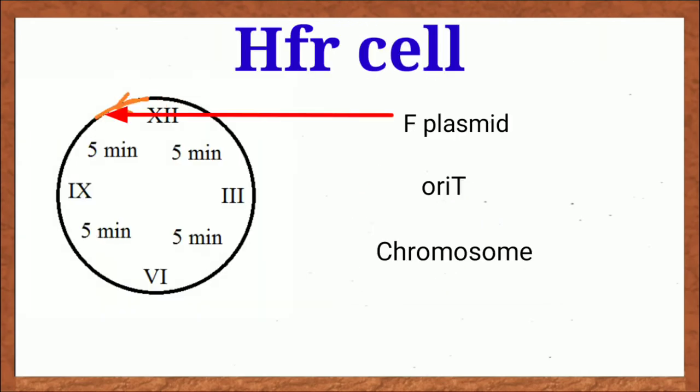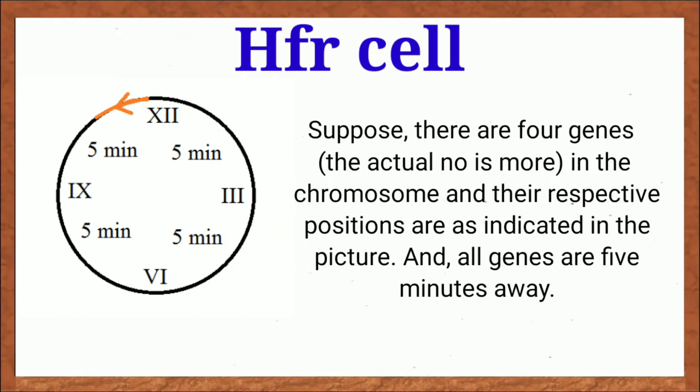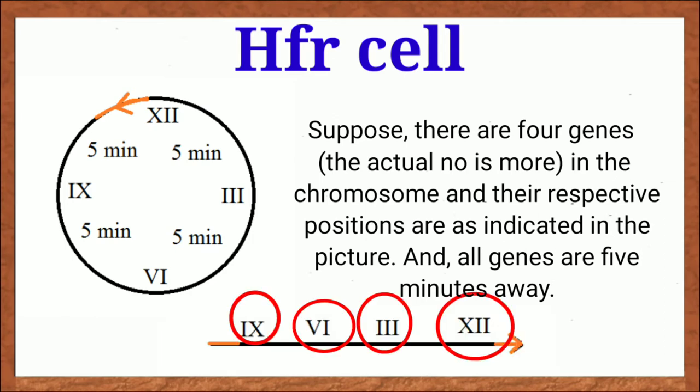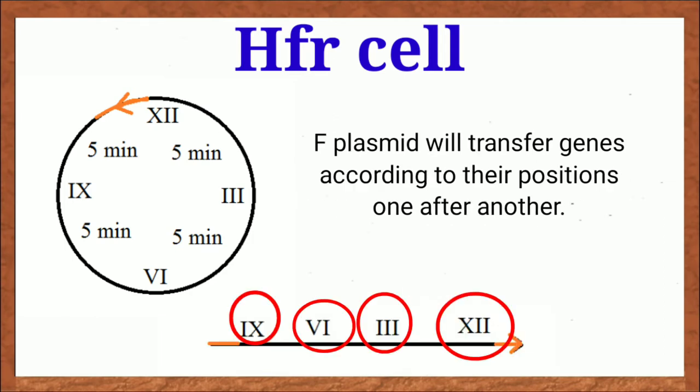In this example, the red arrow is F plasmid and only four genes are shown in the chromosome. For simplicity, gene which is situated very close to the oriT will transfer first, then second, third and so on.